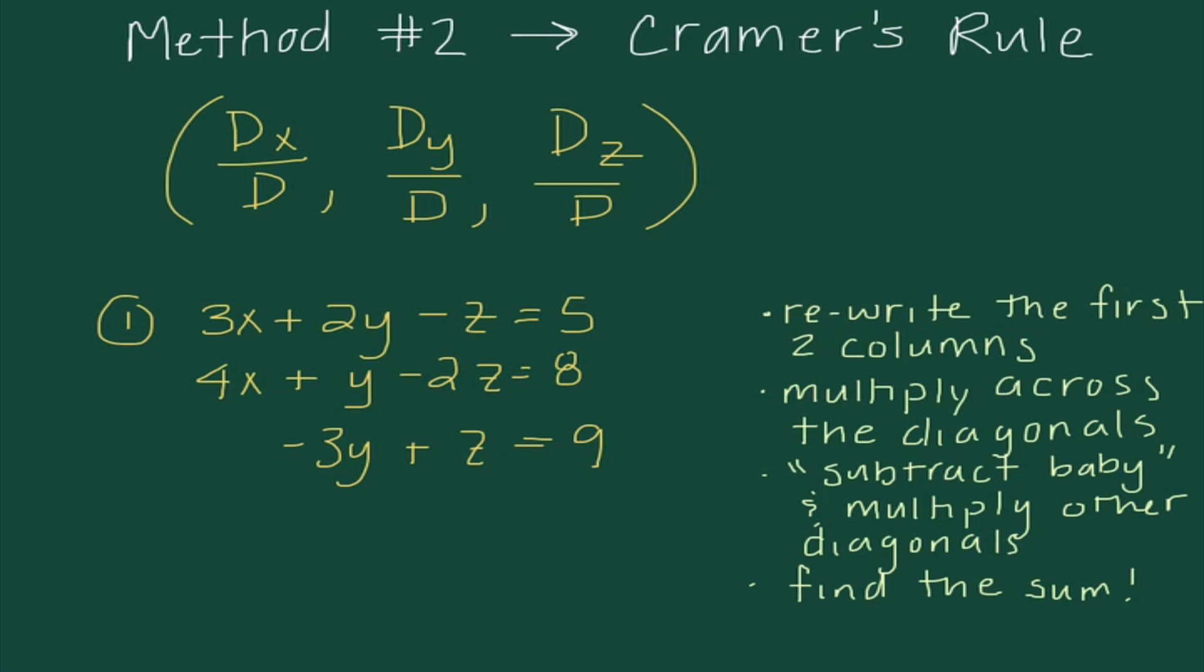So, the first thing I'm going to do after I write those is rewrite the first two columns. Then, I'm going to multiply across the diagonals. This chapter, we're going to go across the diagonals three times until I run out of diagonals that have three terms in them. Then, I'm going to subtract baby and multiply the diagonals going the opposite way. So, if we think about it, it's kind of like Mr. Determine Fish except for this time it's giant. It's a Determine Whale.